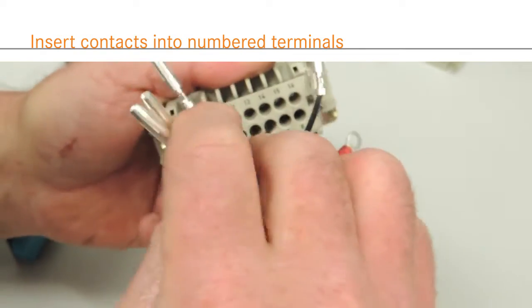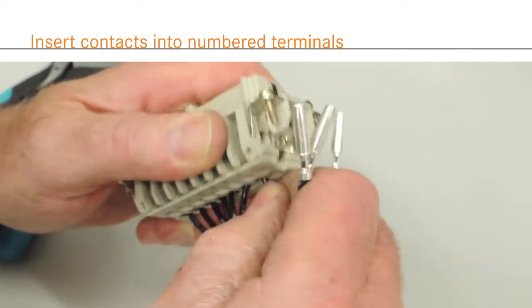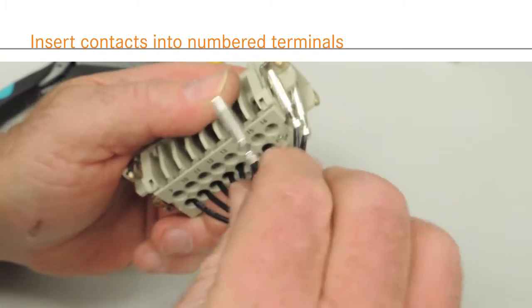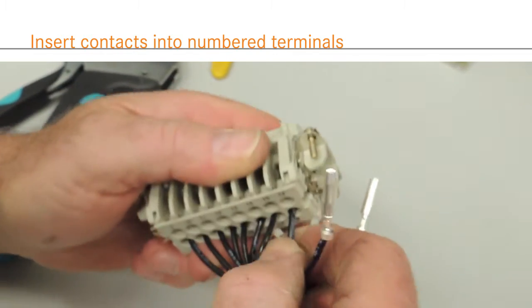Crimp termination is the strongest method of connector wiring. Crimp contacts are permanently affixed to the wire and provide the most reliable vibration protection. These kinds of inserts are also the easiest type to produce in large quantities.